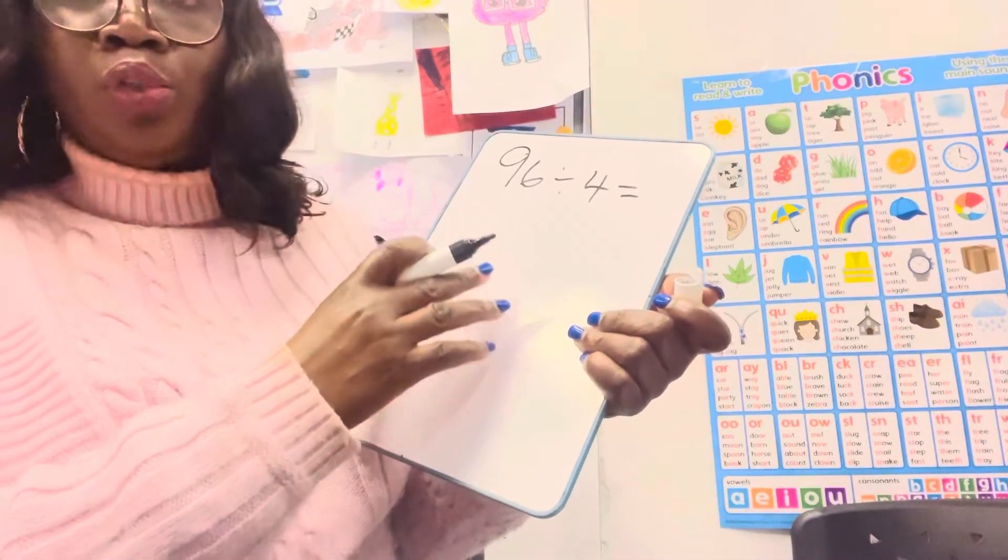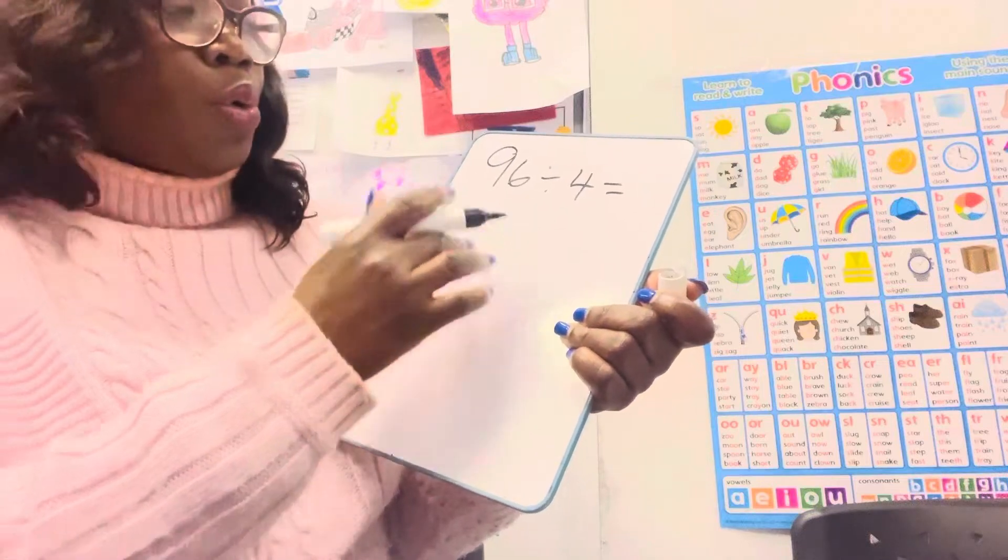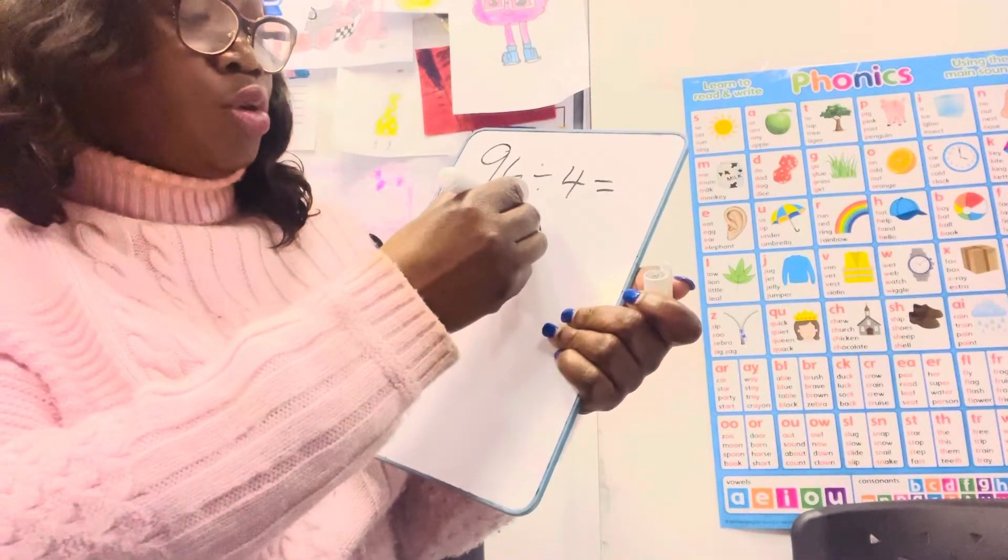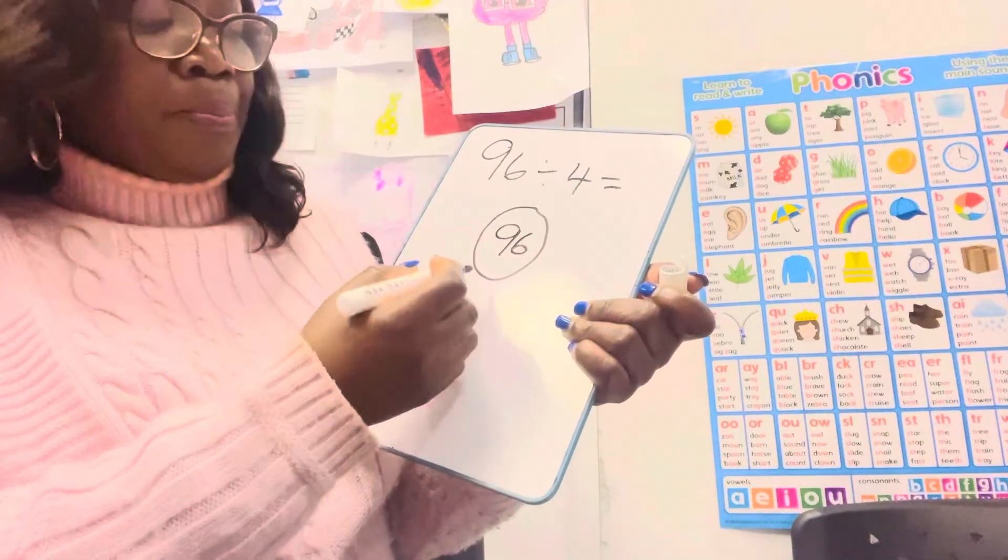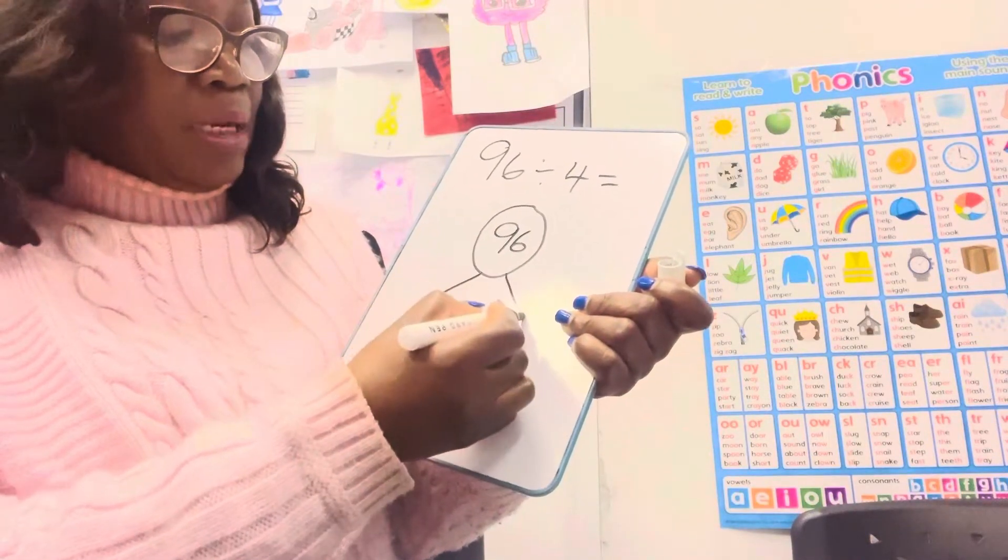We're going to find a number that we know can be divided, that is a multiple of 4, and split this into two.